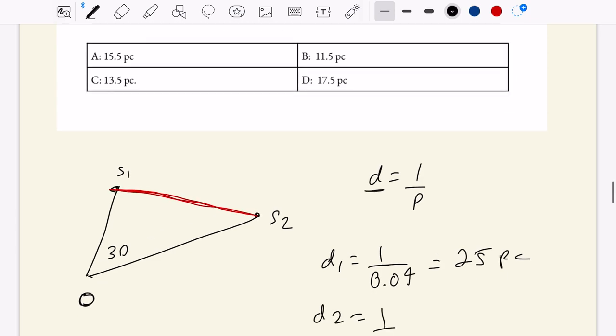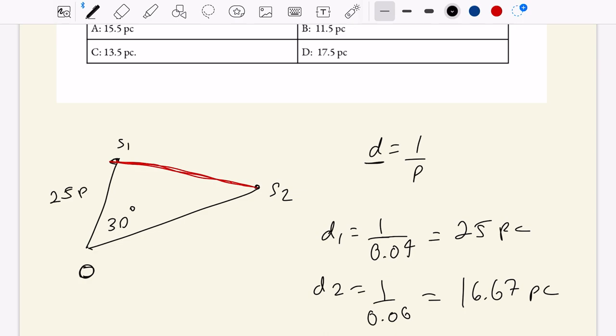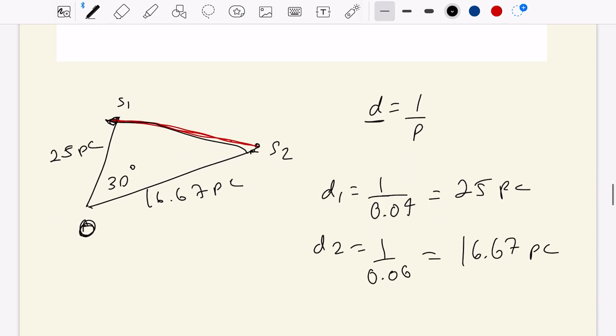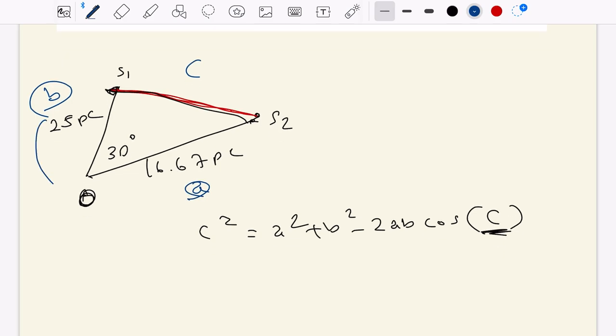So we already have the units that are very convenient for us. So then we can say that D1 is equal to 1 divided by 0.4, that's 25 PC. And then D2 is equal to 1 divided by 0.06. Let's use the calculator, because I'm not sure if I would get the result right away. 16.667, yeah, that makes sense, parsecs. So let's just reflect that on our little picture. 25 PC. This is going to be 16.67 PC. So all we have to do now is find the distance between the two stars, which is this length right here. So to go about doing that, let's use the law of cosines. So if you don't remember, the law of cosines is given by C squared equals A squared plus B squared minus 2AB cosine of C, where the C angle is going to be our 30 degrees right there.